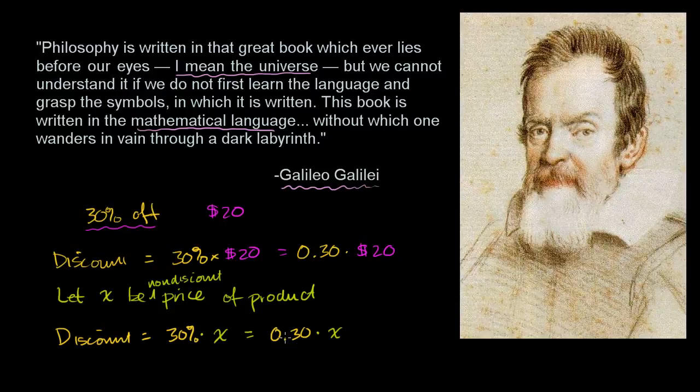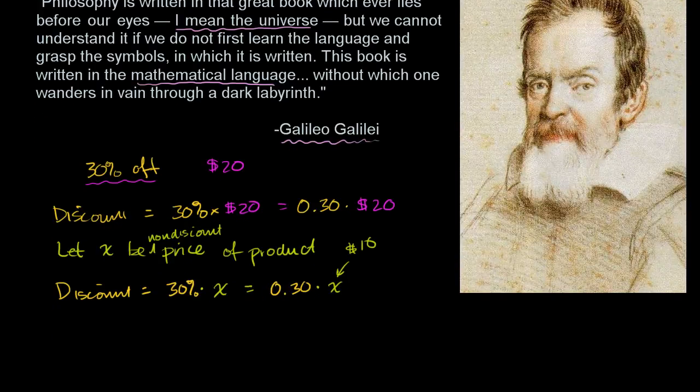But we aren't done here. We can abstract this even more. Over here, we've generalized this for any product. We're not just saying for this $20 product. If there's a $10 product, we can put that $10 product in here for X. And then we would say 0.30 times 10 and the discount would be $3. It might be a $100 product, then the discount would be $30.